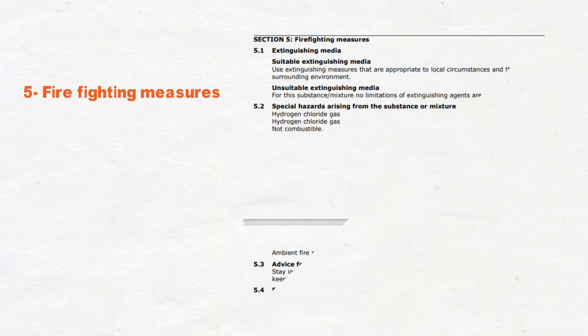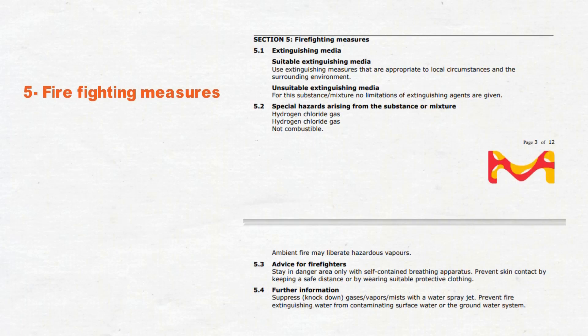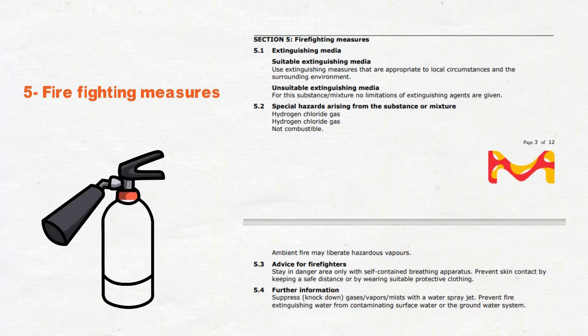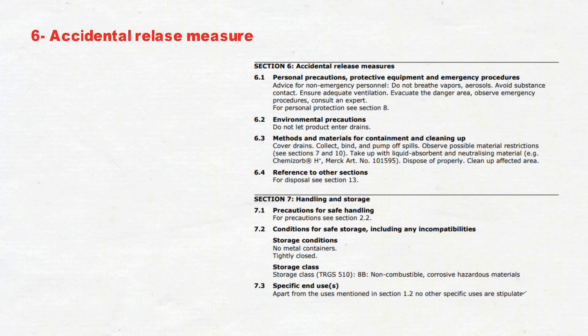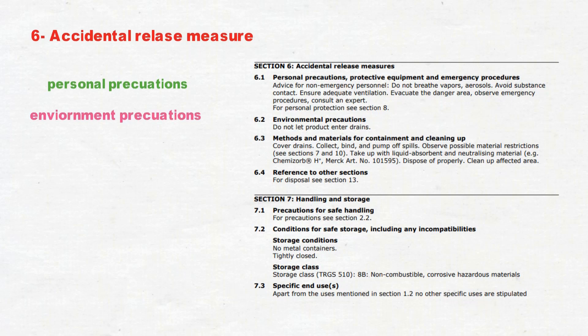Section number 5 covers Firefighting Measures. Here you will know what the extinguishing media is, what special hazards arise from that substance or mixture, and it may advise you on the selection of the right firefighting equipment. In section number 6, Accidental Release Measures, you will learn about personal precautions, what type of PPE to use, emergency response procedures, and methods for containment and cleanup.